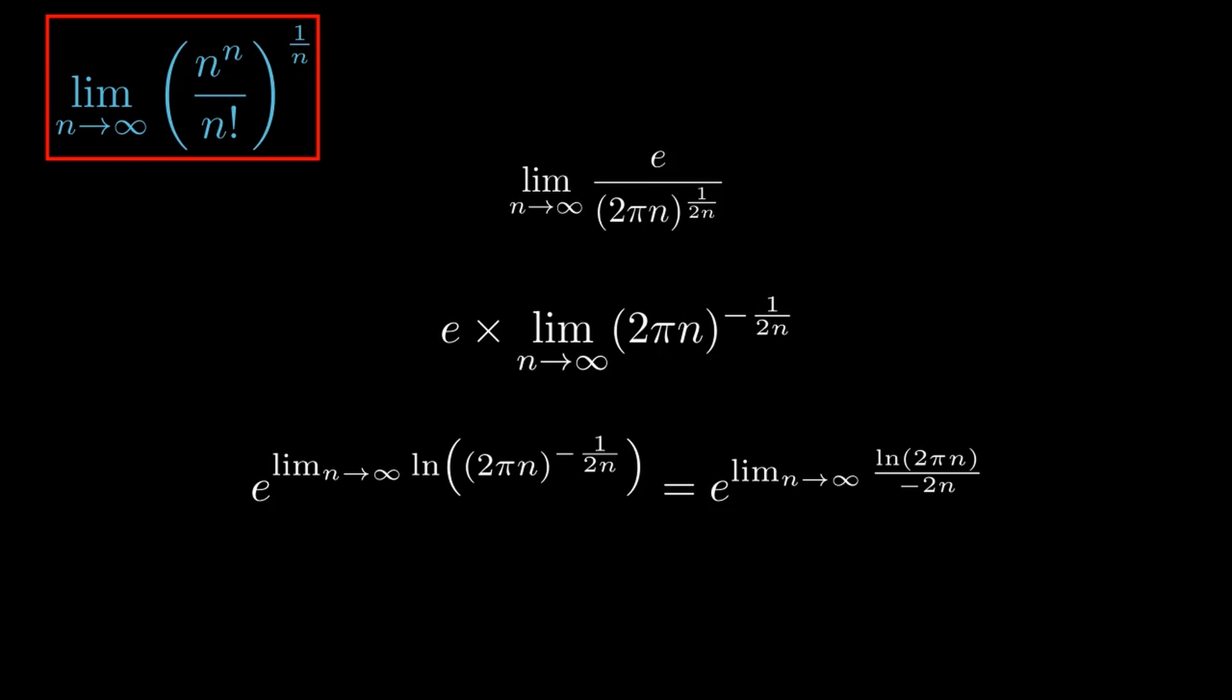All we've done here is raise everything to e to the natural logarithm, which doesn't change the expression. We've used the power rule for the natural logarithm to bring the minus 1 over 2n down to the front. The reason for doing this is because if we evaluate this limit, we see it's of indeterminate form, infinity over infinity.